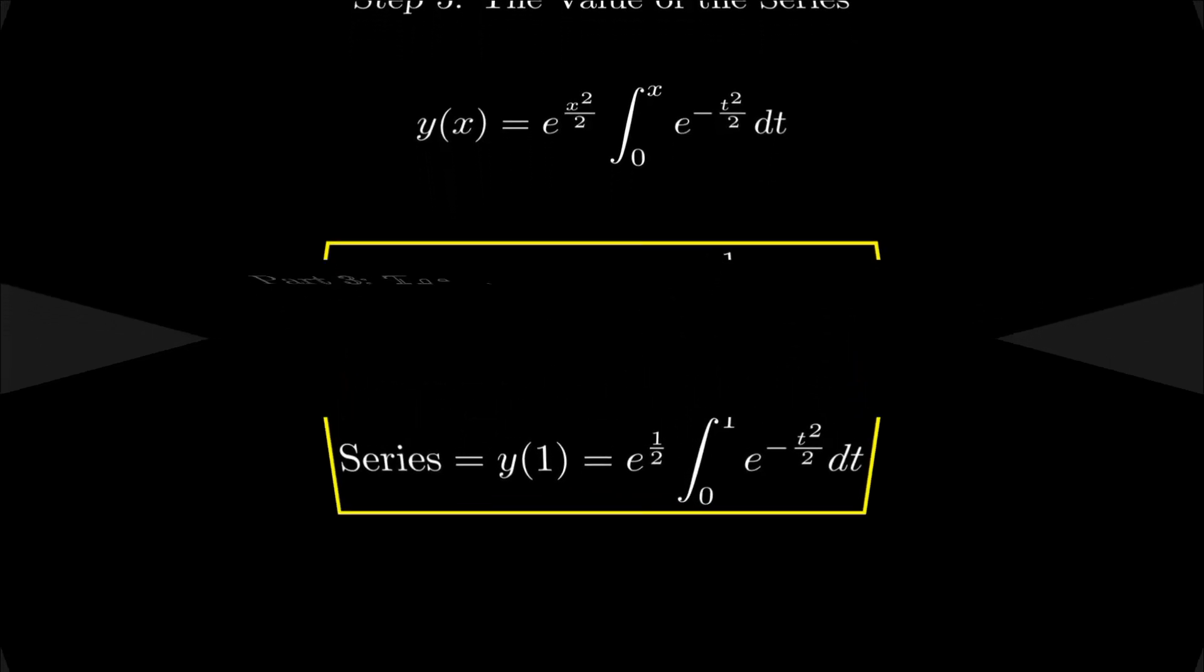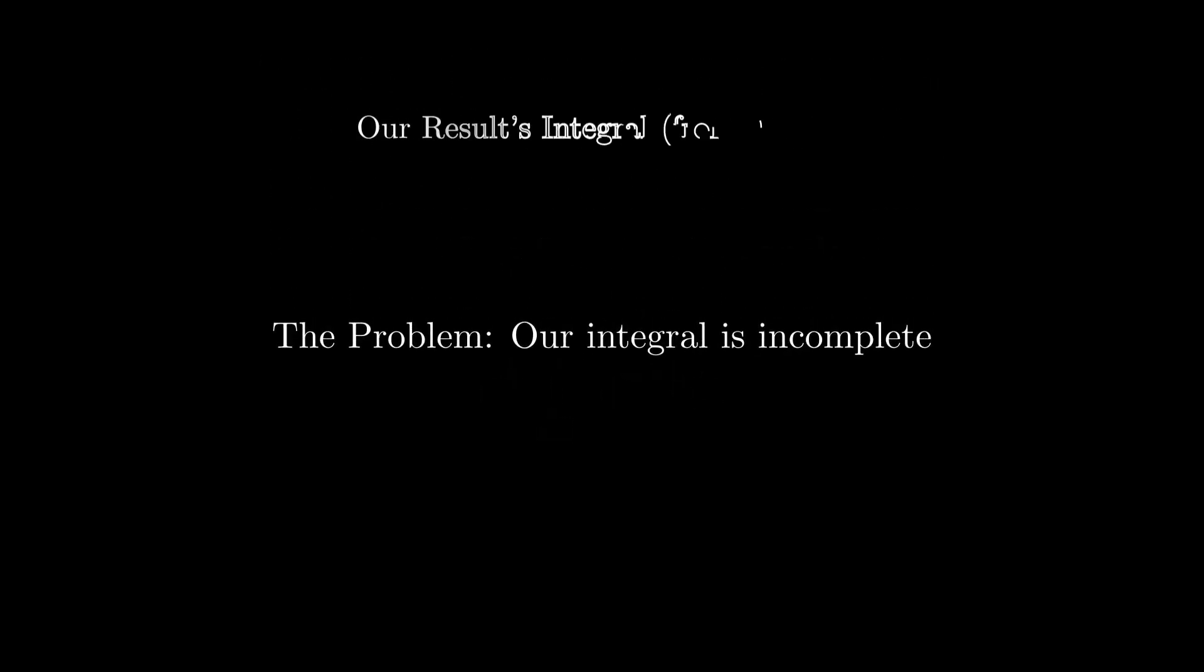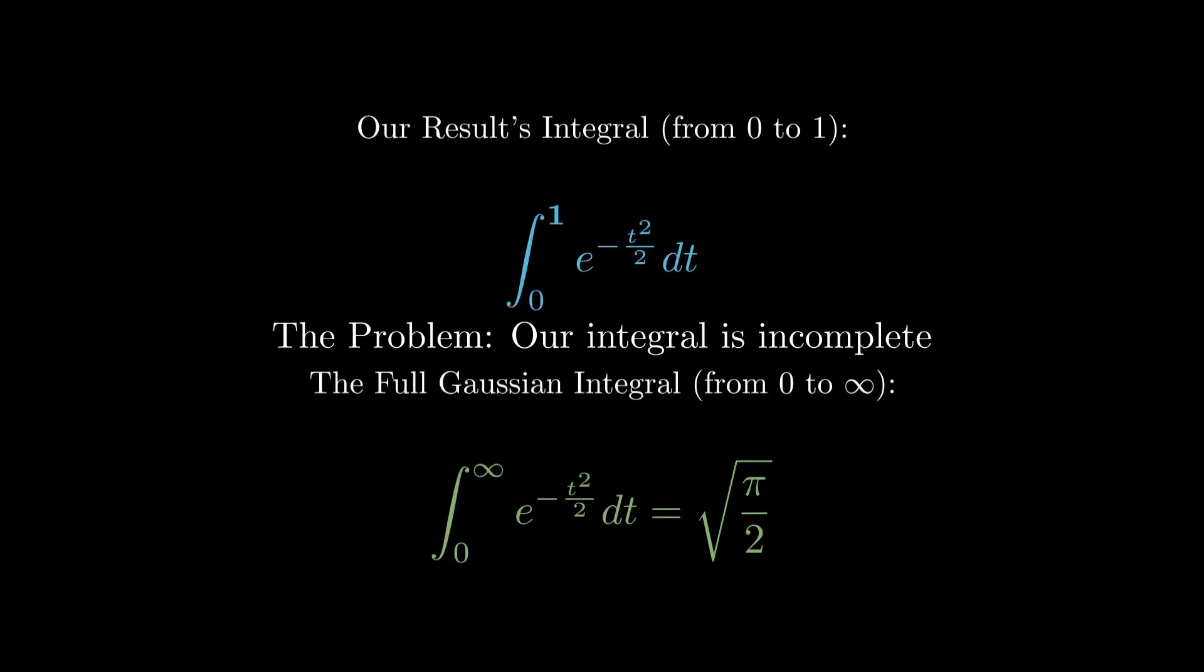Now we turn to the Gaussian integral connection. From part 2, we already have the series expressed as e to the 1 half times the integral from 0 to 1, but that's just the beginning. The full Gaussian integral runs from 0 to infinity and equals the square root of pi divided by 2.